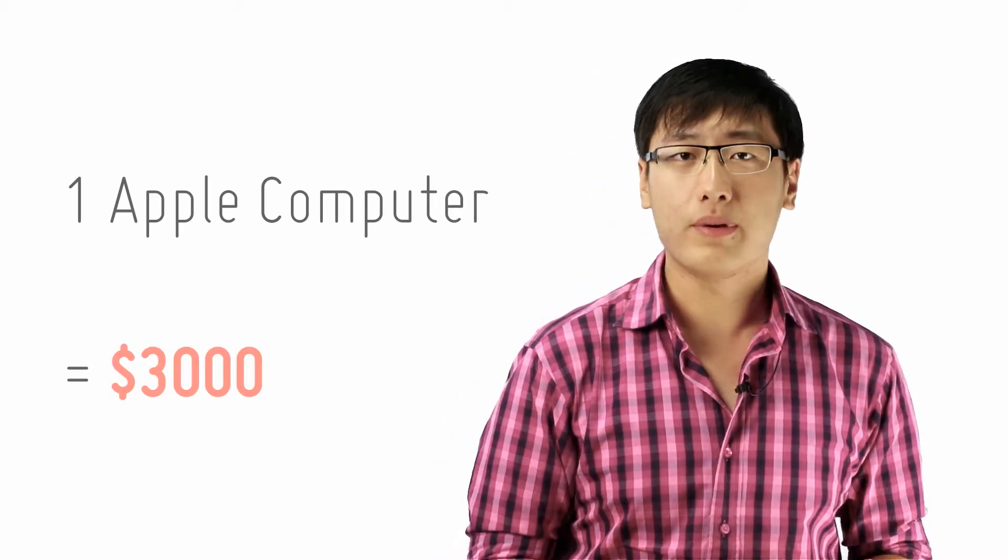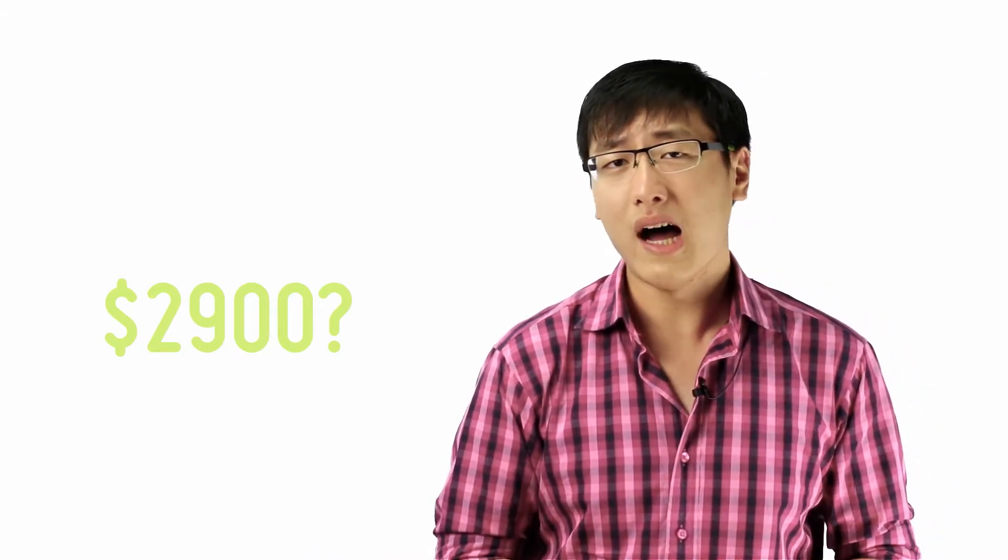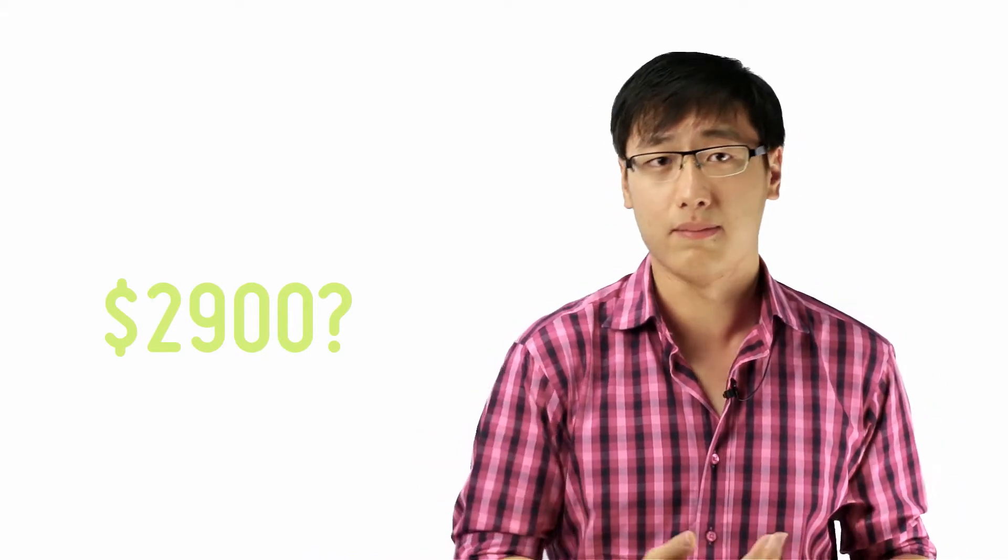Let's say if I were to try and construct a demand curve for Apple computers. Now each Apple computer costs $3,000, and even if I lower it to $2,900, you're gonna say no, I'm not gonna buy another Apple computer just because it lowers to $2,900 from $3,000. So how am I going to construct a downward sloping demand curve?